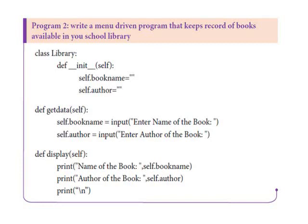We define a getdata function to get information. Inside getdata, self.bookname is assigned using input with the prompt 'enter name of the book'. Next, self.author is assigned using input with 'enter author of the book'.